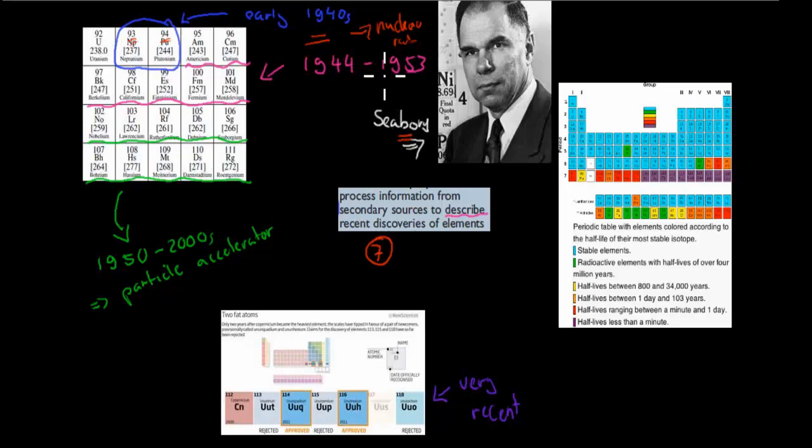Then between 1944 and 1953, Seaborg and the same team discovered quite a few of the other ones, from 95 to 101, most of them were discovered by his team. And they found those at hydrogen bomb testing sites.